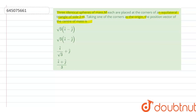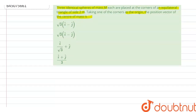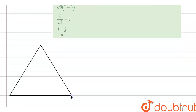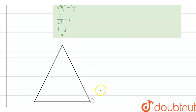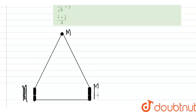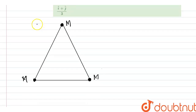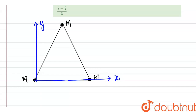So let's visualize the question before solving. We consider an equilateral triangle. At the three corners we have mass M at each vertex. Let's assume this is our y-axis and this is our x-axis. We can now write down the coordinates of each particle.